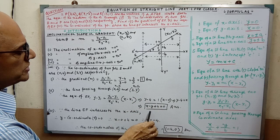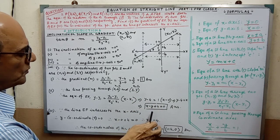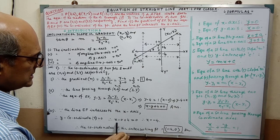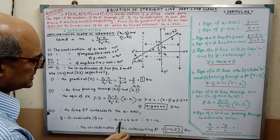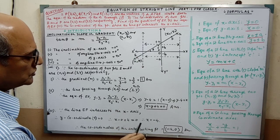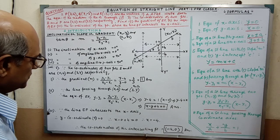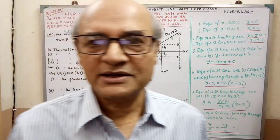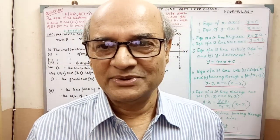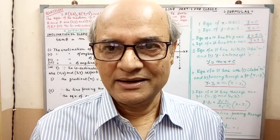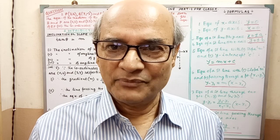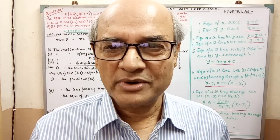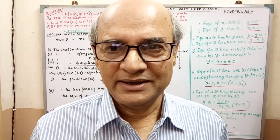Since y equals 0, put this value into the equation: x minus 0 plus 4 equal to 0, giving x equal to minus 4. Therefore, the coordinates of the intersecting point are (-4, 0). If you understand the conditions and the forms of the equations, you can easily solve any sum in this chapter.